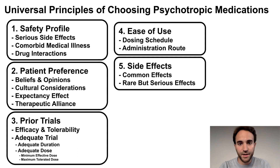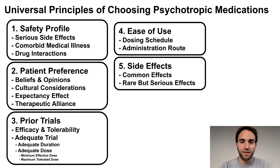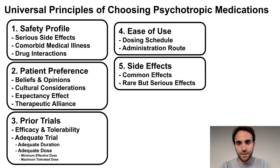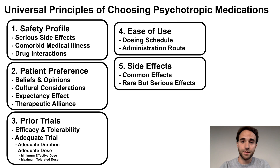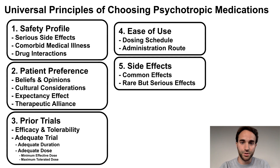Fifth, consider side effects. In general, a medication with fewer or easier to tolerate side effects is going to be easier to adhere to than one with worse side effects. Consider both the common side effects, but also the side effects that may occur only rarely but are potentially serious — for example, organ failure, heart arrhythmias, or seizures.